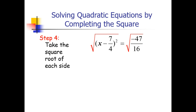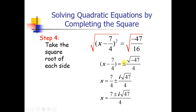For step 4, we cancel the square root and the squared on the left side, and take the square root of the right side. However, negative 47 has no real square root, but 16 does — its square root is 4. So we get x minus 7 over 4 equals plus or minus the square root of negative 47 over 4. Since the radical expression is negative, it is an imaginary number i. Transposing negative 7 over 4 gives us 7 over 4 plus or minus i times the square root of 47 over 4 as the final answer.